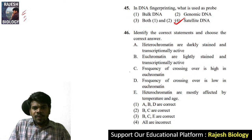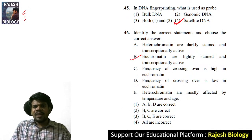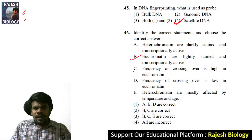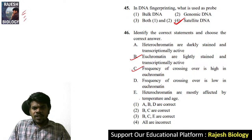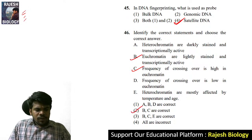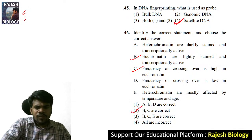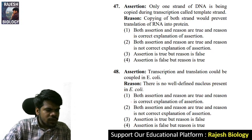Question 46: only B and C are correct. Euchromatin is lightly stained and transcriptionally active. The frequency of crossing over is high in euchromatin. The right answer is option two.